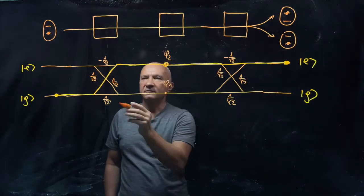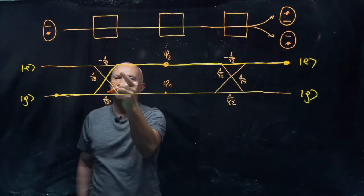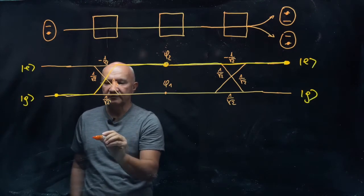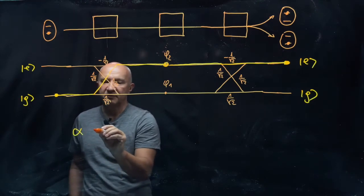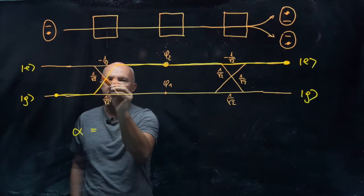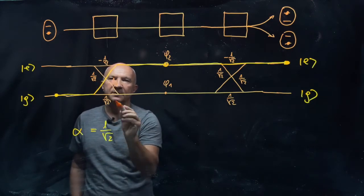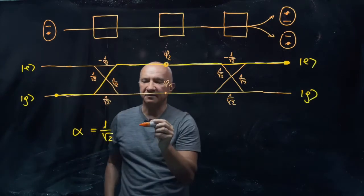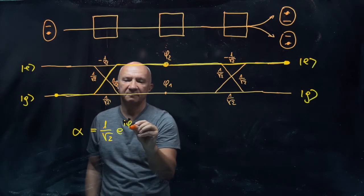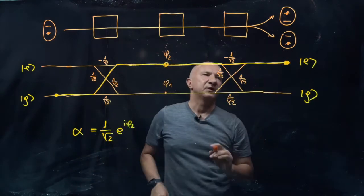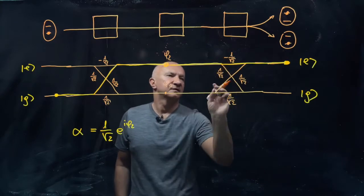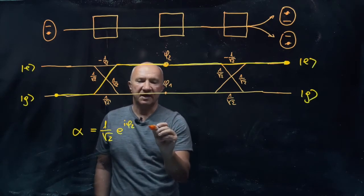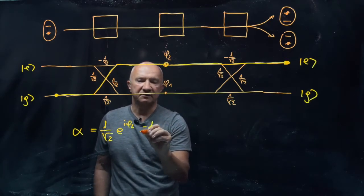Let's write the probability amplitude for this first path, which I'll call alpha. The first segment contributes one over root two. The second segment — passing through the central cavity — contributes a phase factor e^(iφ₂). Then the third segment: the transition in the final cavity that leaves the atom in the excited state happens with probability amplitude minus one over root two.